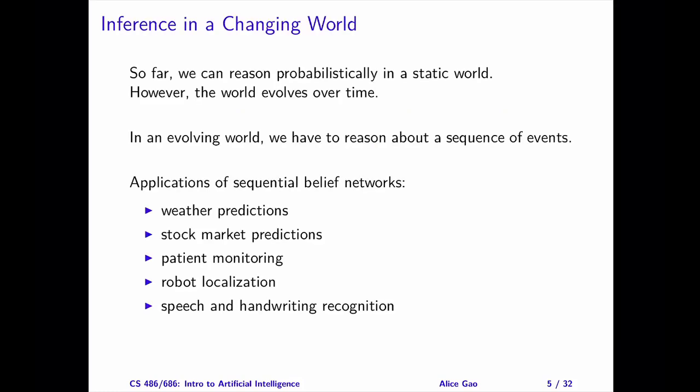So far, we have looked at algorithms for reasoning in a static world. However, the real world changes over time. When the world changes, we need to reason about a sequence of events. In this video, I will introduce hidden Markov models and describe how we can use hidden Markov models to model a changing world.